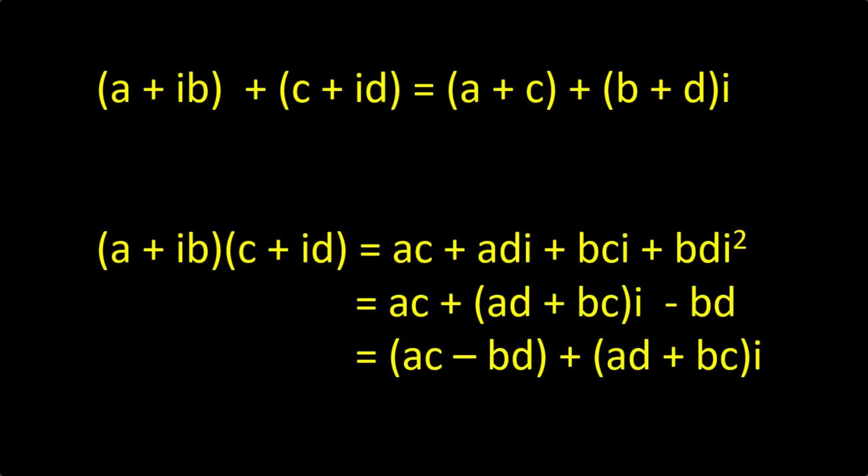So mathematicians decided to call the square root of minus 1 the imaginary number, even though nobody can imagine what it might be like. It's usually given the symbol little i. A lot of algebra was developed dealing with the imaginary numbers.